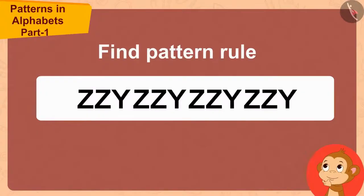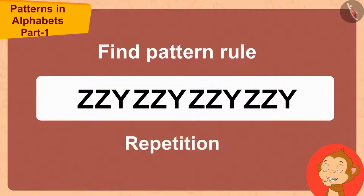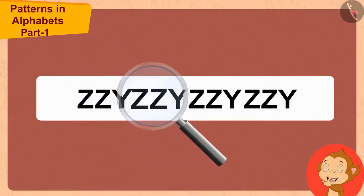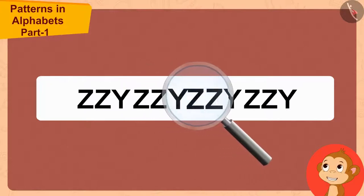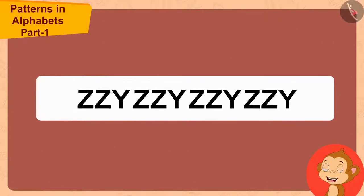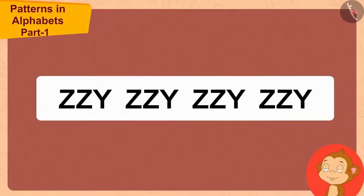Let us see whether Babban was able to recognize the rule of this pattern. "Hmm, first I try to find some sort of repetition in it. Z, Z, Y... Z, Z, Z, Y... Z, Z, Z, Y. Good — here, Z, Z, Y is repeating in these three-letter groups over and over again."